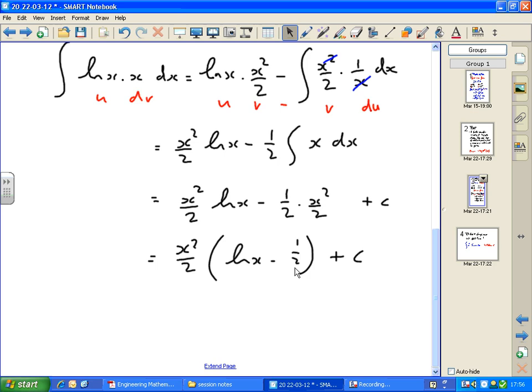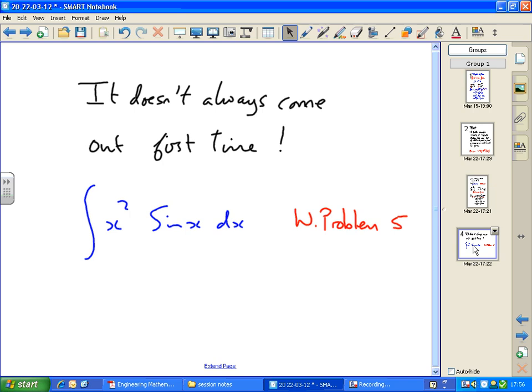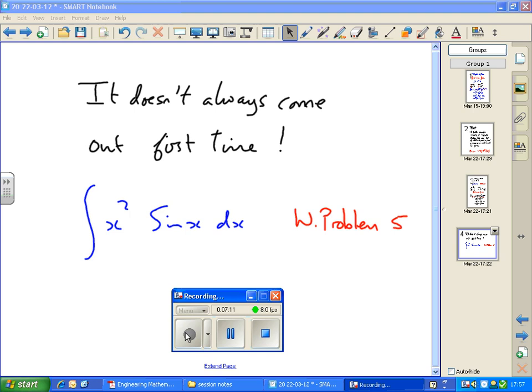Right, let's have a look at one more example. It doesn't always come out first time. When you're using integration by parts, it doesn't always come out first time. We have to use it more than once. Look at this example. Just wait until you've written it down and then we'll have a look at it. If we look at this problem, if you think back to the first one, or the ones we were looking at last week where we had just one x in it. If I differentiate x, the x disappears and therefore I can do the integral because there's only one variable inside this time, the sine of x term.